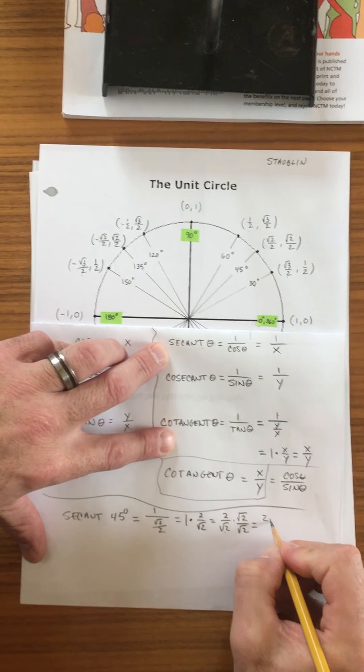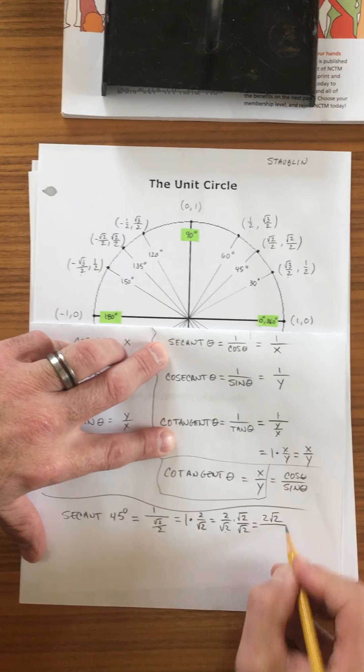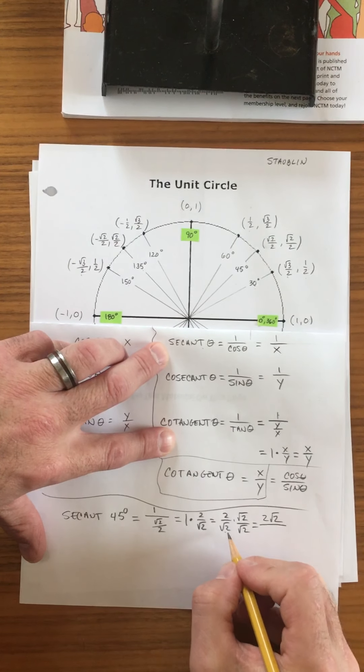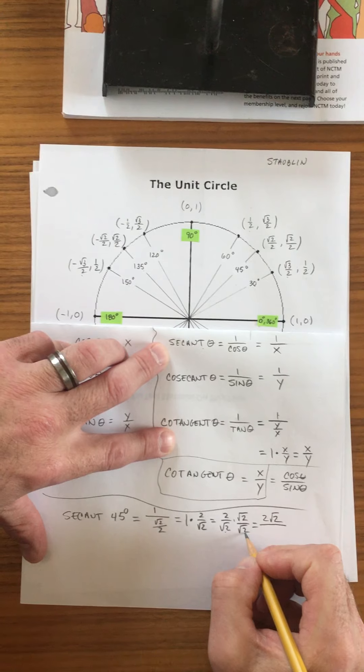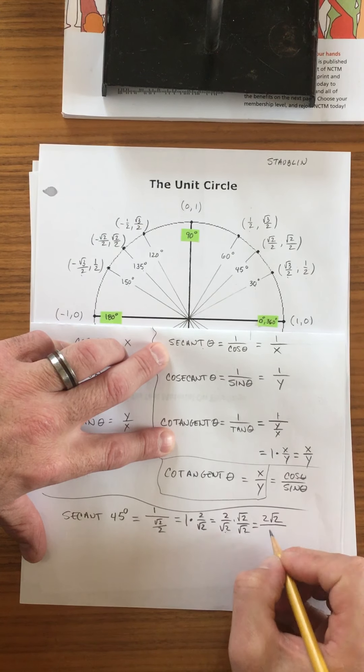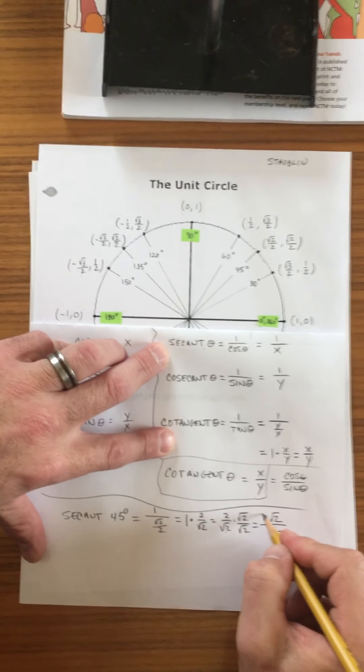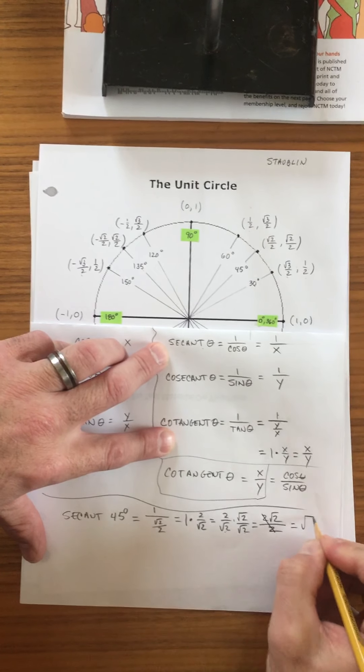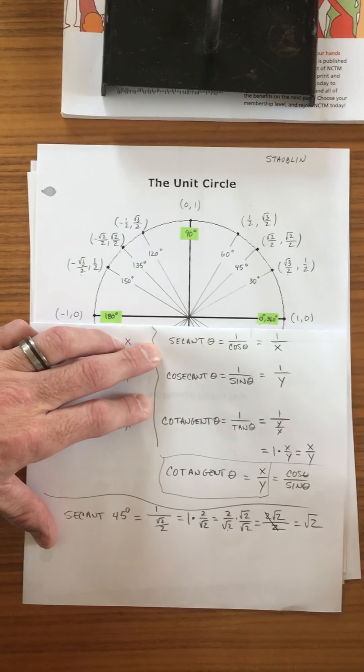And we end up in the numerator, 2 square root of 2. And in the denominator, we get square root of 2 times square root of 2, which is square root of 4, which is 2. And then those cancel, and it ends up being square root of 2.